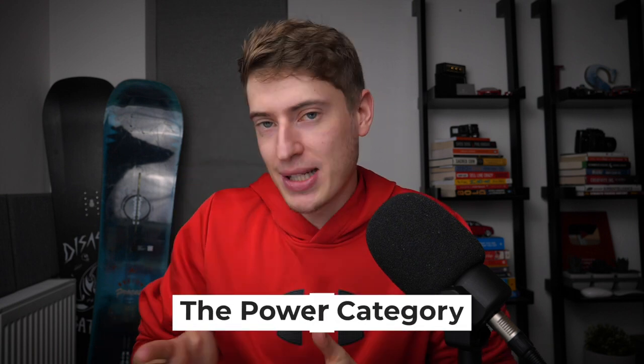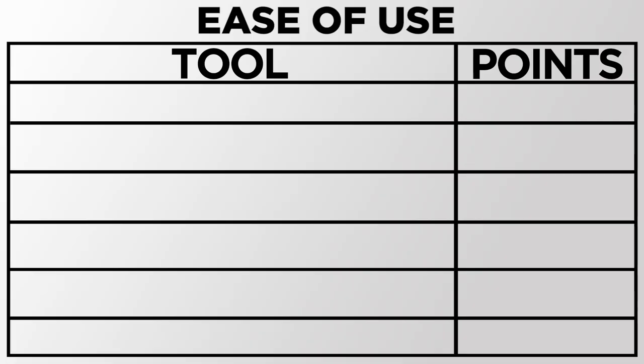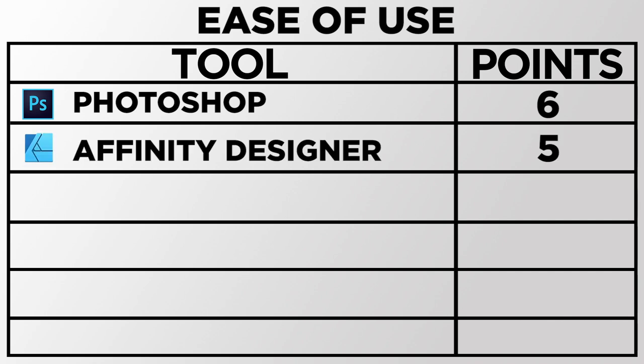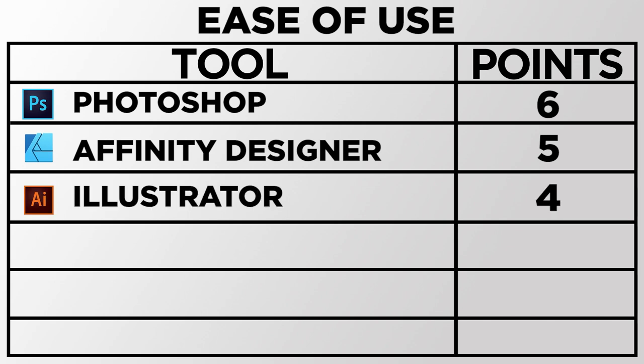Part four is power — which tool offers the most features and allows you to do the most with it. Coming in at number one with six points is Photoshop; I personally believe it's the most powerful tool for graphic design. Affinity Designer comes next — very similar to Photoshop but a much cheaper option with slightly fewer features. Illustrator gets three points; it's brilliant for graphic designers. These tools have so many features that they become more complicated to use as well.